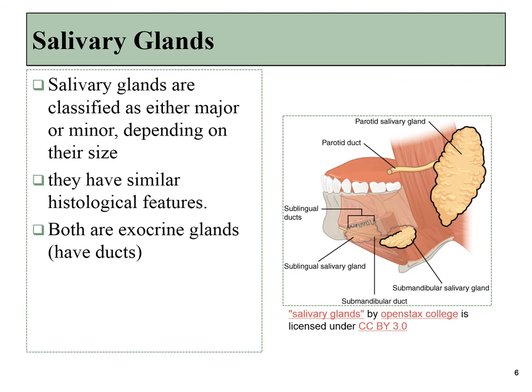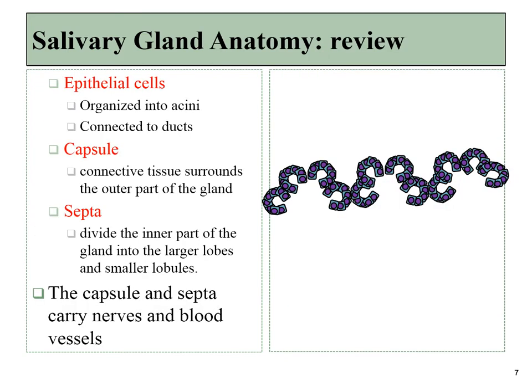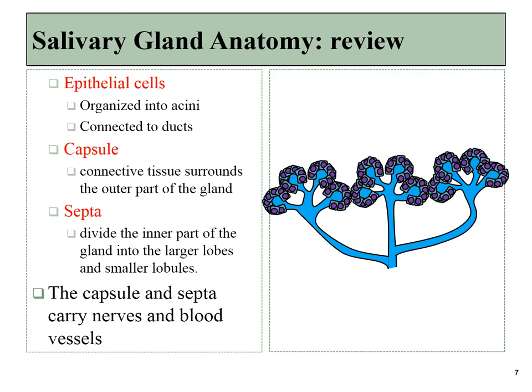There are major and minor salivary glands, with the main difference being mostly size, but predominantly the major ones have been given names. They are all exocrine glands, meaning they all have ducts, and they all share similar histology. Your basic salivary gland consists primarily of simple cuboidal epithelial cells that produce saliva. These are arranged into structures called acini, which often surround the beginning of a duct. The ducts are also composed of epithelial cells arranged into tubes, and these allow for saliva to exit the gland.